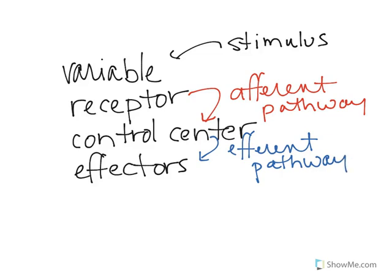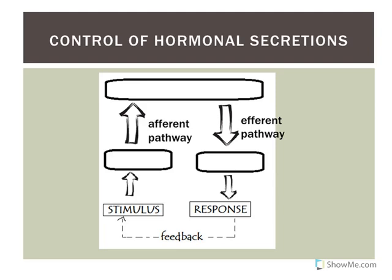The control center will tell the effectors what to do via an efferent pathway — hopefully you remember that from A&P 1. Applying it to the endocrine system: a stimulus causes a change in the variable, the receptor detects that change and tells the control center via an afferent pathway. The control center — typically an endocrine organ — will release a hormone into the bloodstream as the efferent pathway, and the target effectors carry out certain responses.